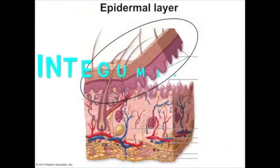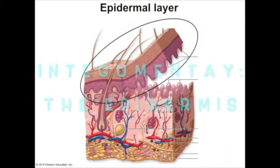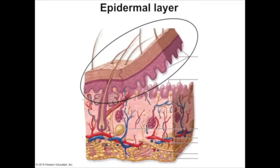First we're going to go over the most superficial layer, the epithelial layer, the epidermis. Epi meaning above, dermal meaning dermis. So when you think of the epidermis, think of a wall of closely packed cells that are going to provide the primary protective elements of skin.